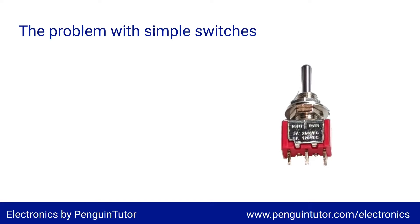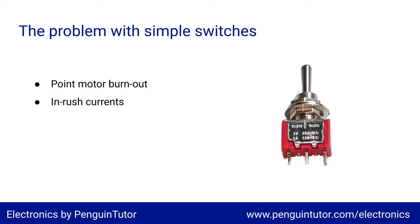There are a number of problems with using this simple switch mechanism. Firstly, point motor burnout — the solenoid coils are designed to be operated for only a short period of time. If you hold the switch in one direction then the energized coil will overheat and eventually burn out. The capacitor discharge unit will prevent this by only allowing the current to flow for a short period of time. Another problem is the inrush current: when a coil is first energized it has a very low resistance and will let a lot of current flow; as the magnetic field builds up it will resist the flow and reduce, but the initial surge is known as an inrush. The inrush can be a large demand on your transformer or power supply, meaning you need a more powerful power supply. It can also cause voltage spikes and dips which can be bad for other electronics connected to the same power supply.